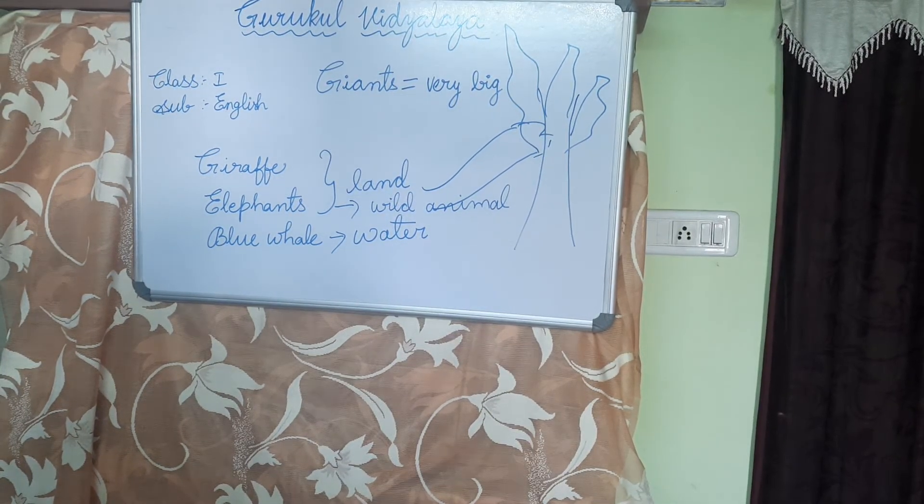The first animal we are going to learn is the Giraffe. Do you know what is meant by Giraffe, children? Have you ever seen one? We cannot see it here, but we can see the picture of a Giraffe. It lives in the forest, so we cannot see it directly, but we can see its pictures.